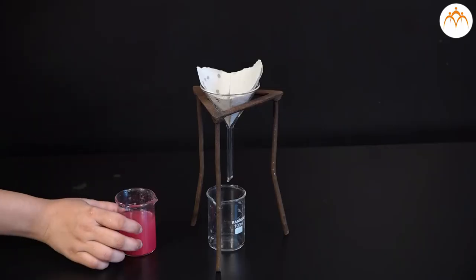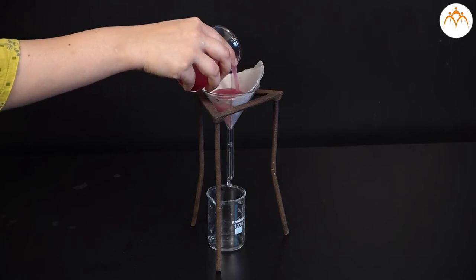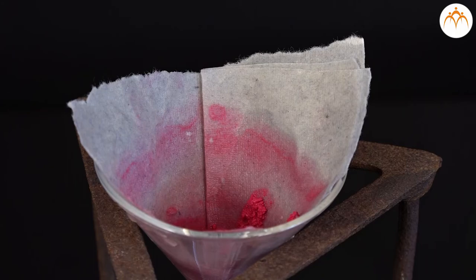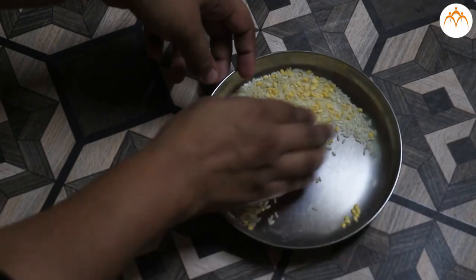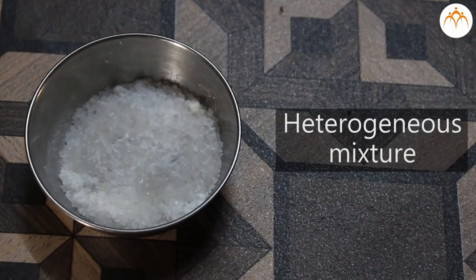To separate chalk powder from water, we can use the filter paper because chalk powder will stay on the fine mesh of the filter paper, whereas water being a liquid can pass through the mesh.